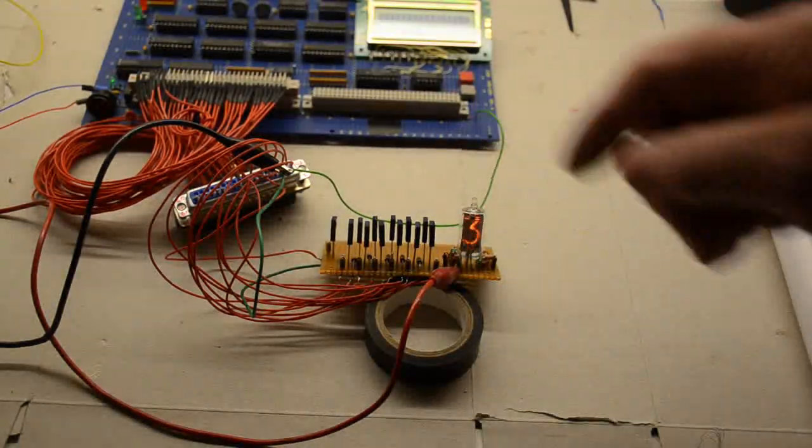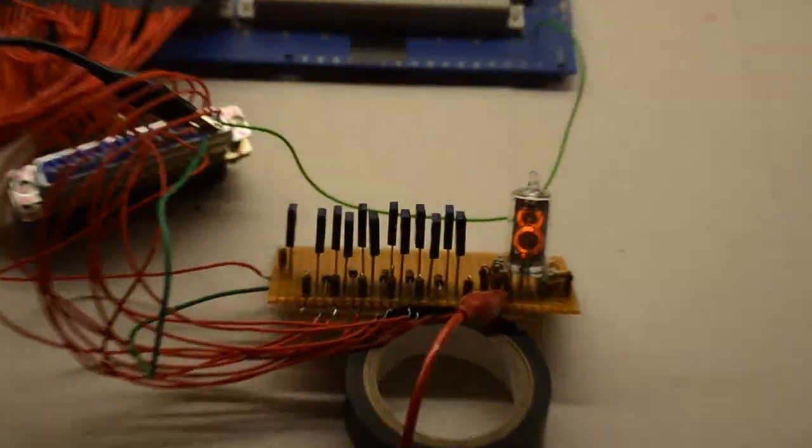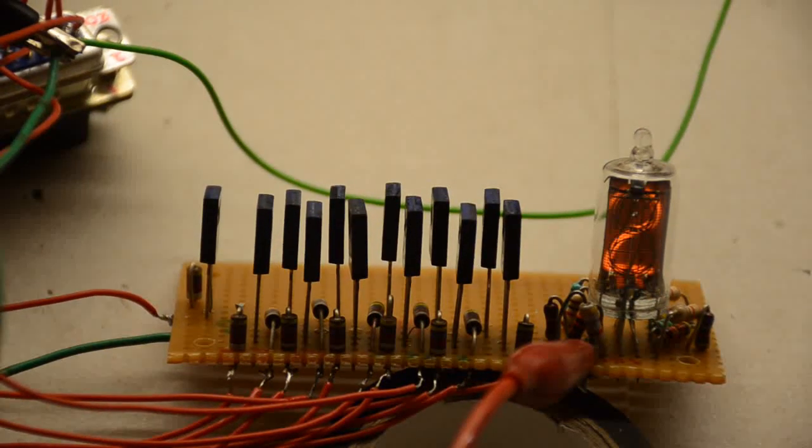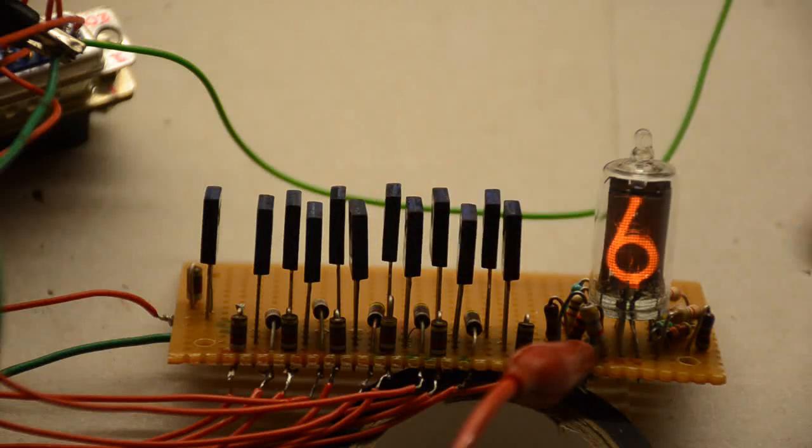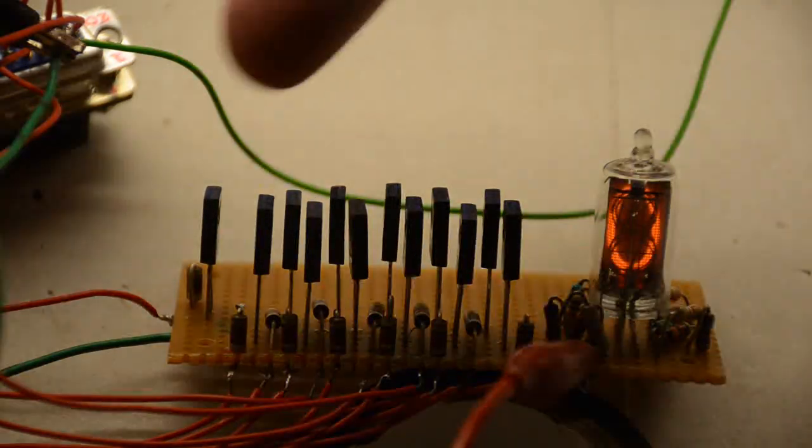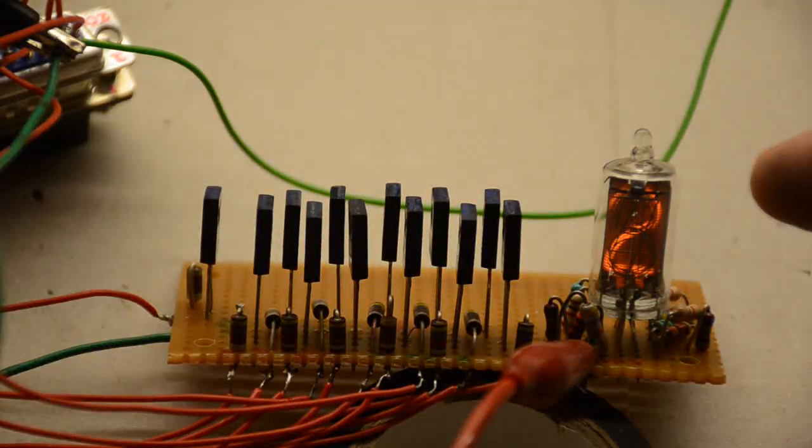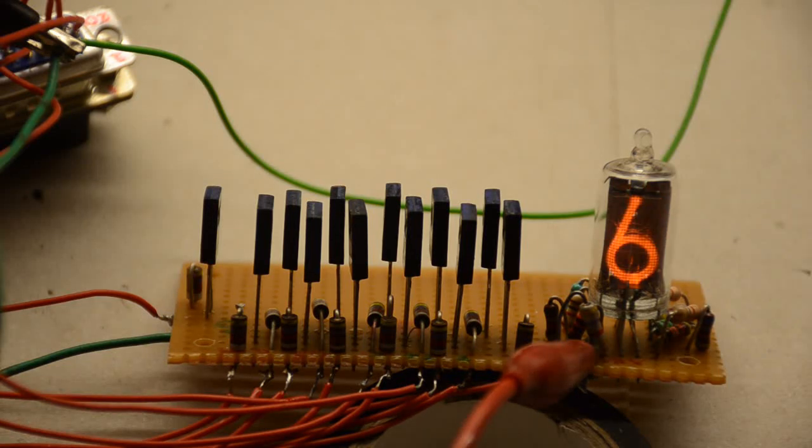This is the board. If we have a little look at the board, not a lot to say about it. Obviously you have the tube itself, there's about 24 resistors on it, and the 12 driver transistors for the 10 digits and the two decimal points.